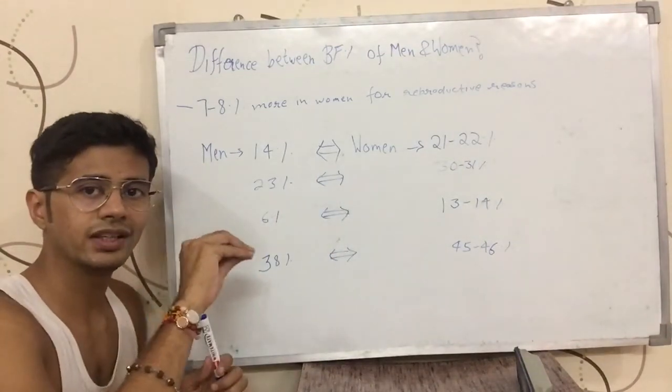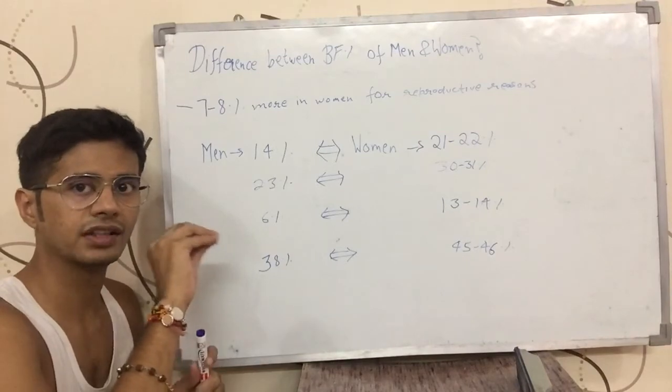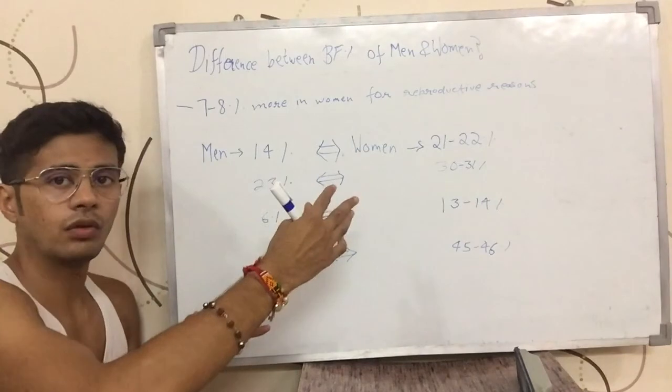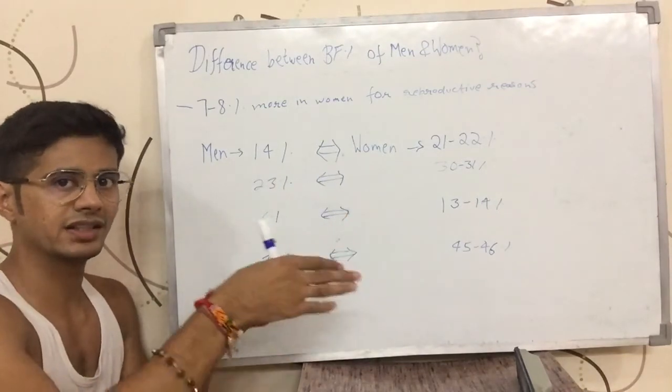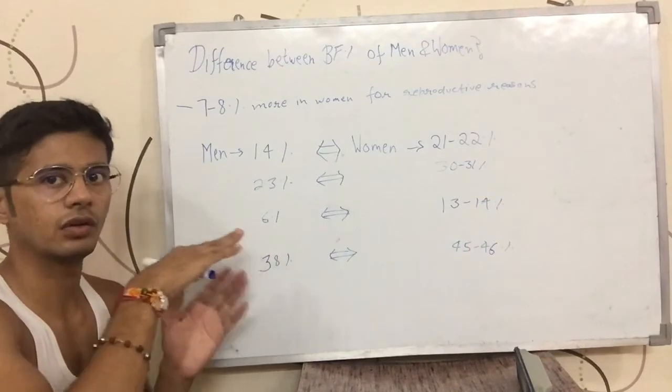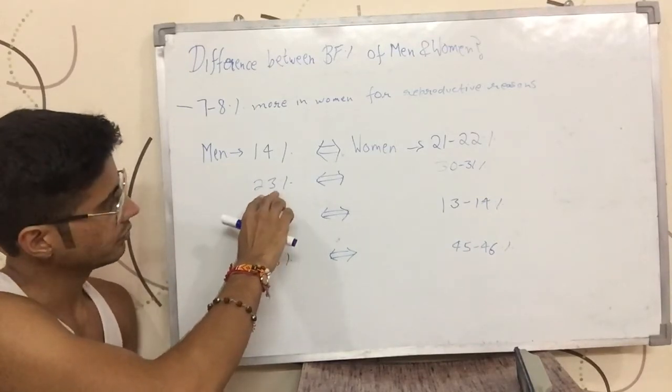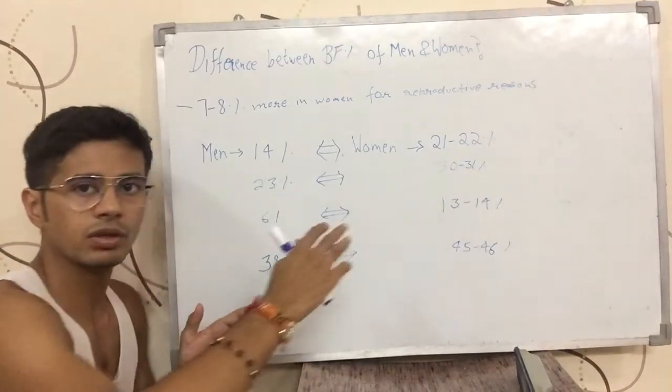If you only look at the fitness level by the amount of fat that they have in their bodies, then the fitness level of a woman having 7 to 8 percent more body fat is kind of equal to the fitness level of the man. So if the man has 23 percent body fat, then a similar fitness level woman would have around 30 to 31 percent body fat.